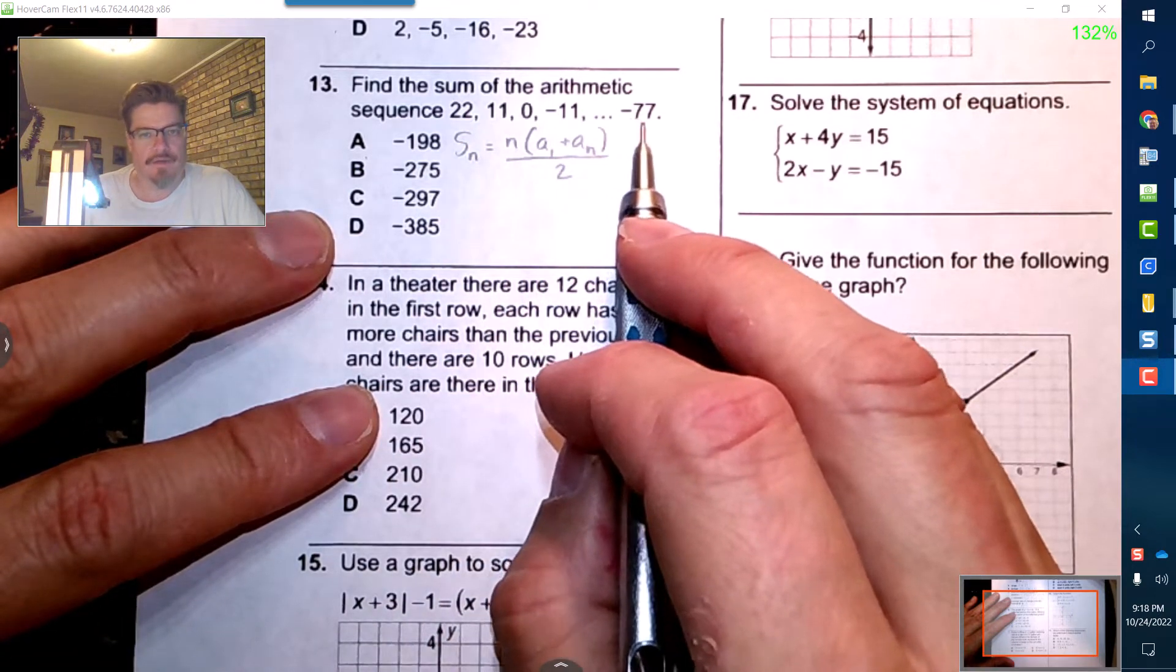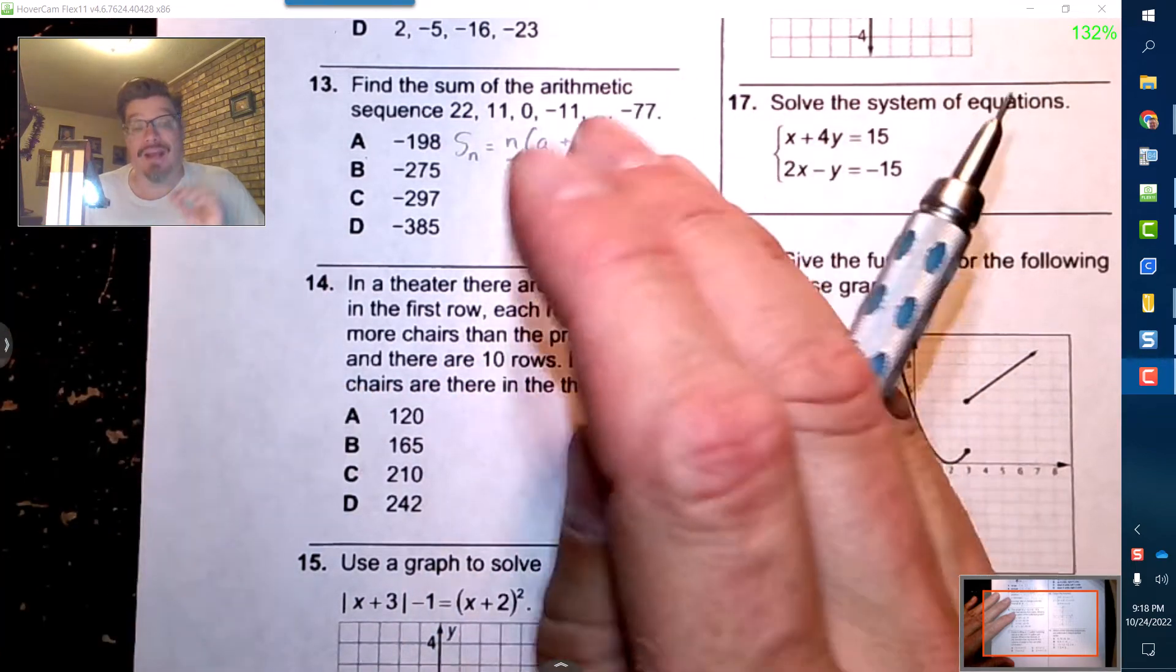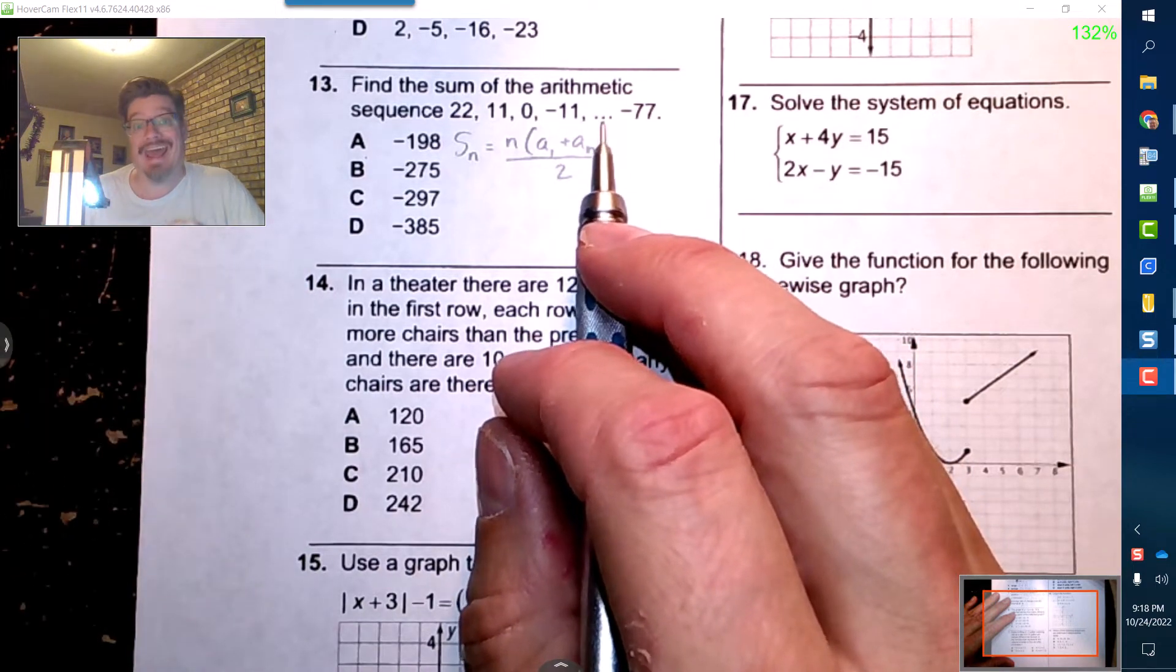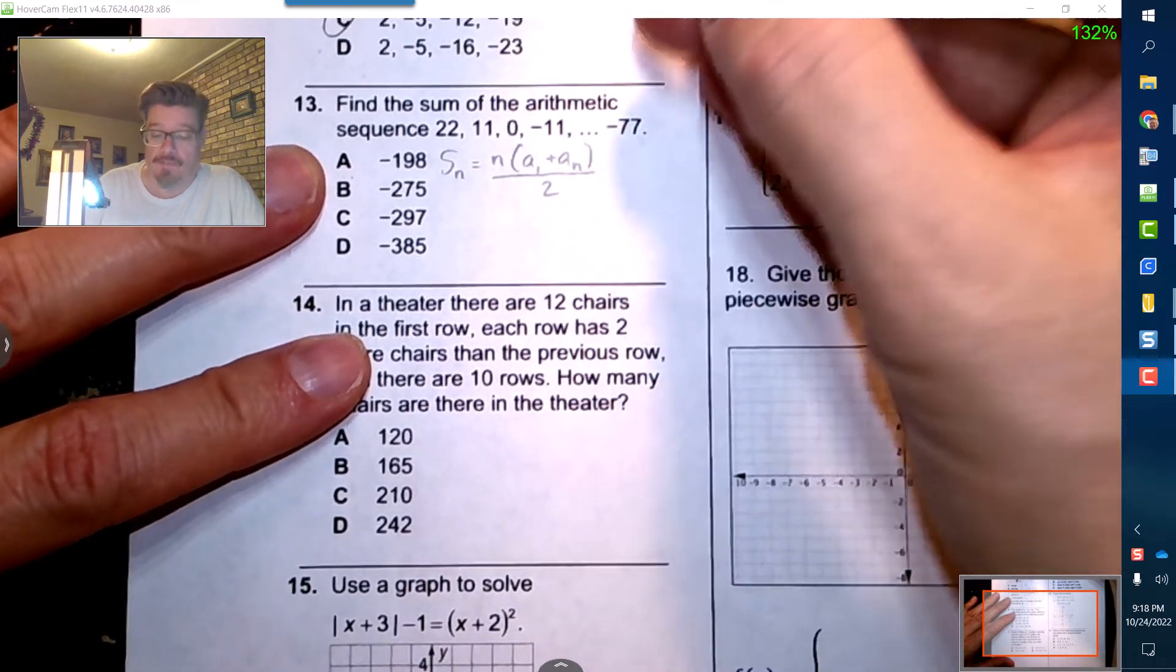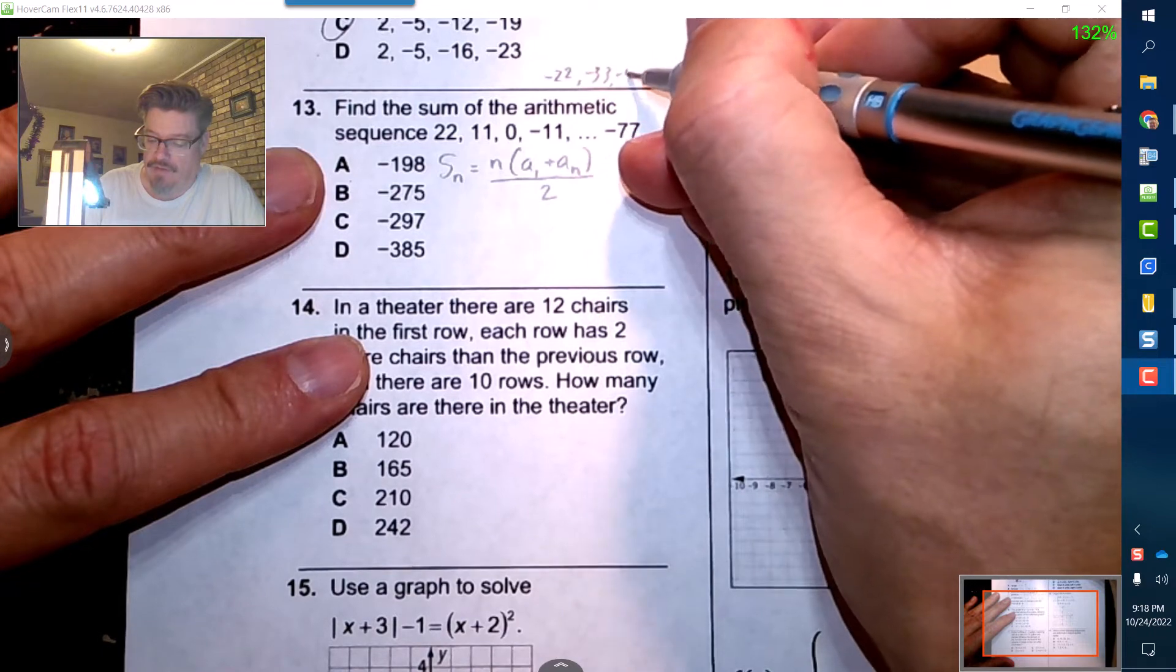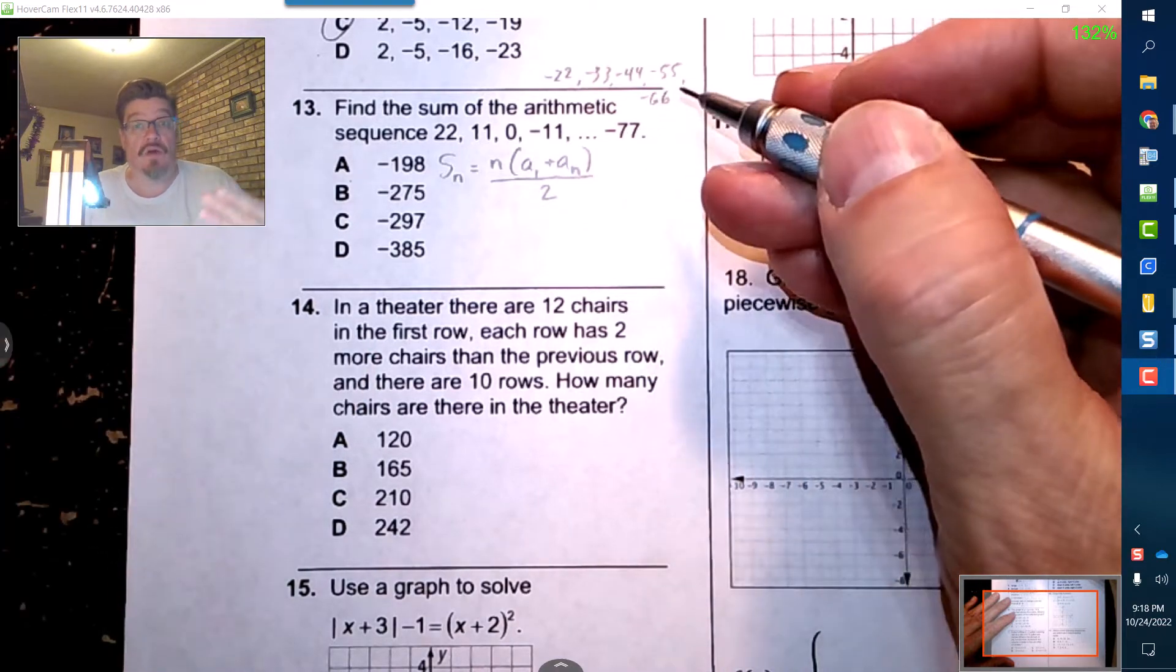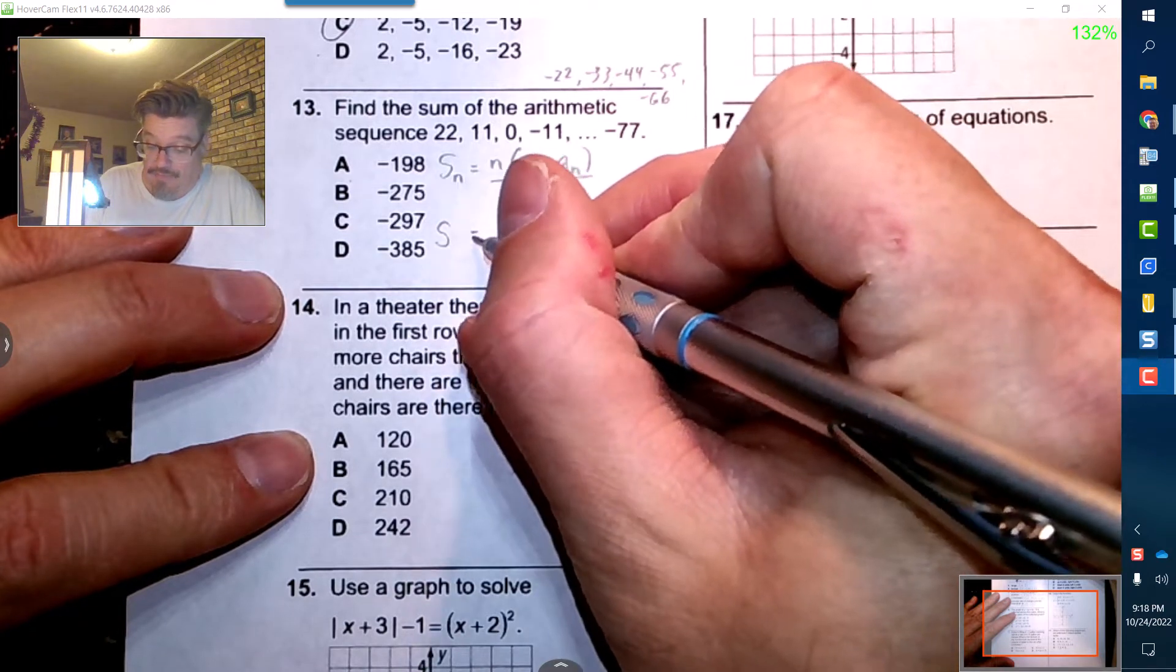Now I got the a sub 1, that's 22, and I do have the last one, negative 77, but I don't know how many times this has gone down. Now what I can do is these two are close enough where I could actually count them. I think it's worth it to do. So I'm gonna go just up here and I'm gonna go 22, 11, 0, negative 11, negative 22, negative 33, negative 44, negative 55, negative 66, then negative 77.